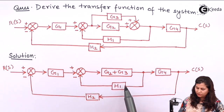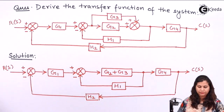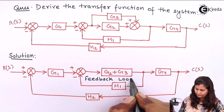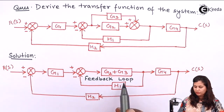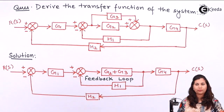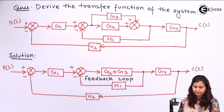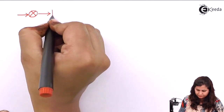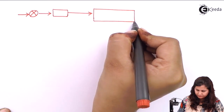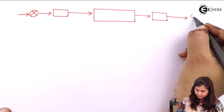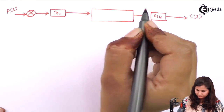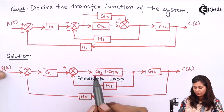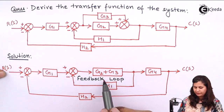Now, if we see this G2 plus G3 and H1, they are forming a feedback loop. So if we apply the feedback rule in this loop, then we can reduce this portion of the block diagram. The feedback rule says that the transfer function of the resultant block will be G2 plus G3 upon 1 minus H1 multiplied with G2 plus G3.